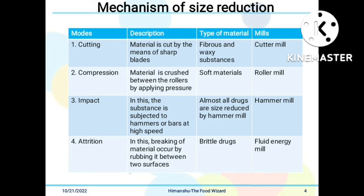The third mode is impact: the substance is subjected to hammers or bars at high speed. The type of material is almost all drugs, which are size-reduced by impact. The mill used for impact is the hammer mill.